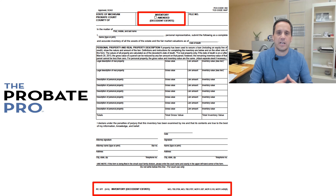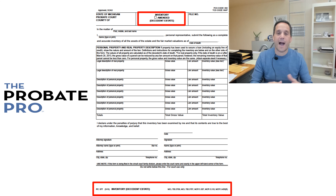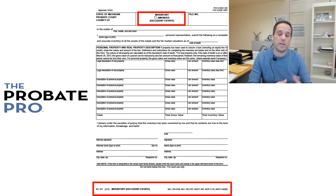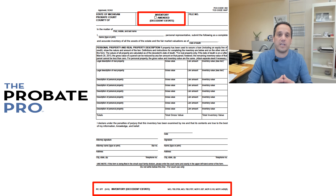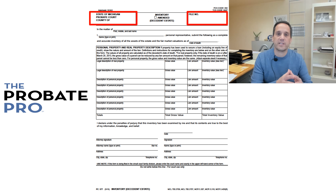At the top of this form in the red box, you'll see a checkbox for whether this is an amended inventory or the original inventory. That box would only be checked if you're amending a form that had already been presented. Below that red box, the applicable court rules and statutes as well as the form number are identified.